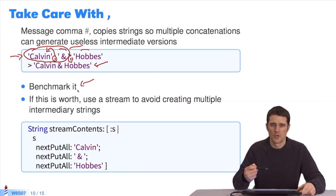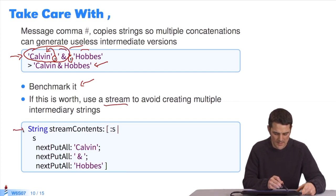You had a session on benchmarking. You can use benchmarking to really see what's going on and whether it wouldn't be worthwhile to use a stream. I generate a string of characters and I say that I will define a stream content with colon s and I can directly send strings to this stream to generate the final string. This way, I avoid intermediary strings.